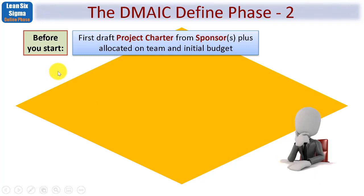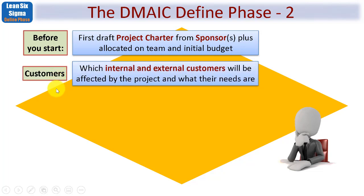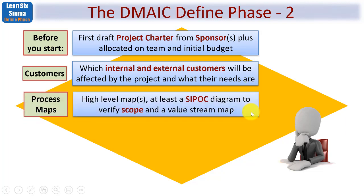Before you start, review the first draft project charter normally created by the sponsor, and confirm that a team has been allocated along with at least some initial budget. We need to understand which internal and external customers will be affected and what their needs are. We'll build high-level process maps, which at a minimum include what's known as a SIPOC diagram, and also verify the scope — what's in and what's out. A value stream map may also be needed.